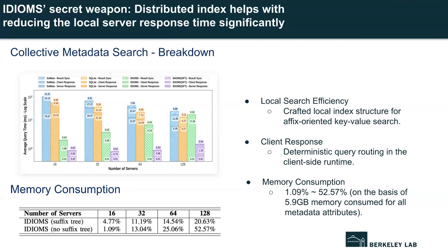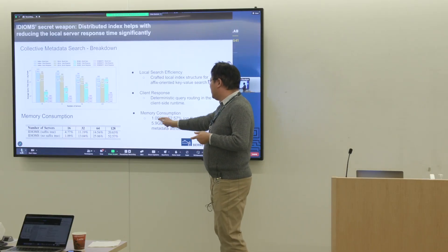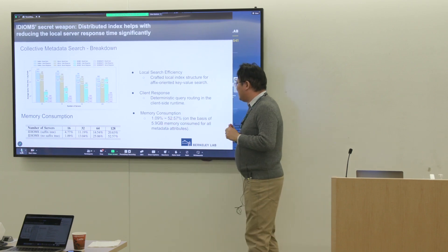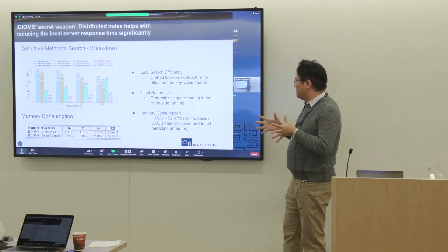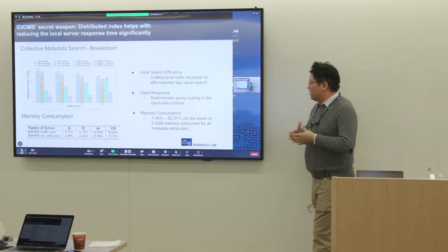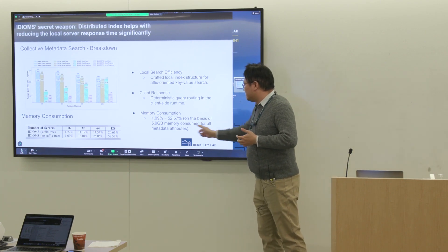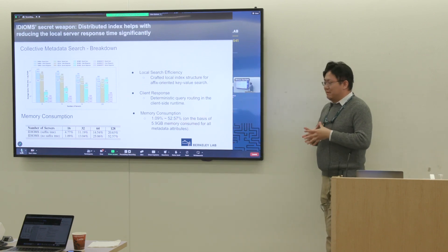We also achieved minimized client response time due to deterministic query routing in the client-side runtime. In terms of memory consumption, we achieved only 1.09% to approximately 52% additional memory overhead, on top of 5.9 gigabytes of memory consumed for all metadata attributes.